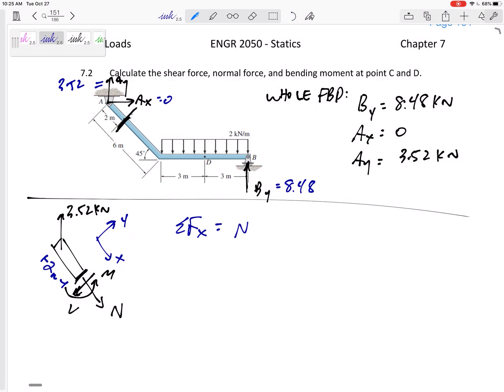All right. So that's going to be N. And then this one is going to be, let's see, what is that component? Well, this is a 45 degree angle. You can't go wrong with 45 degrees. But I think this might have ended up being the complementary to 45, which is 45. So this would be minus 3.52, I'll say cosine 45 equals zero. So N is 2.49 kilonewtons.